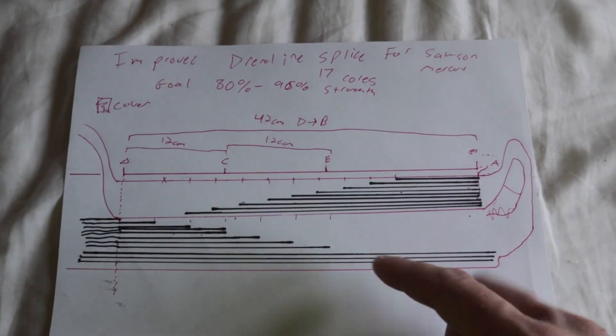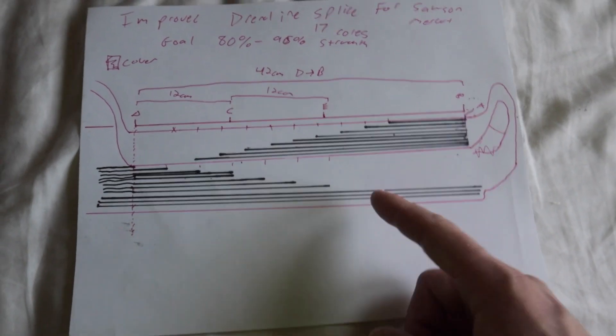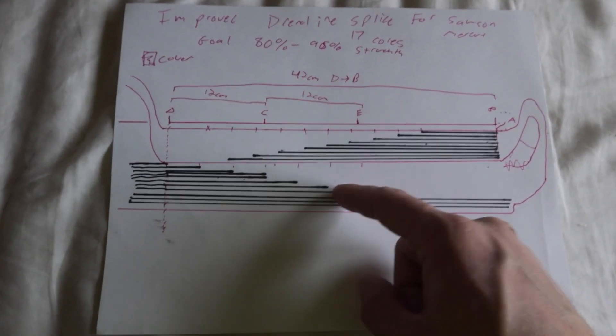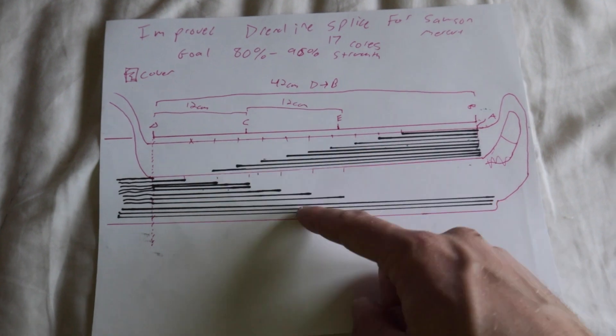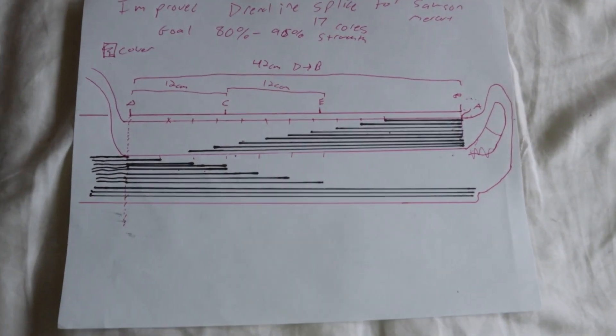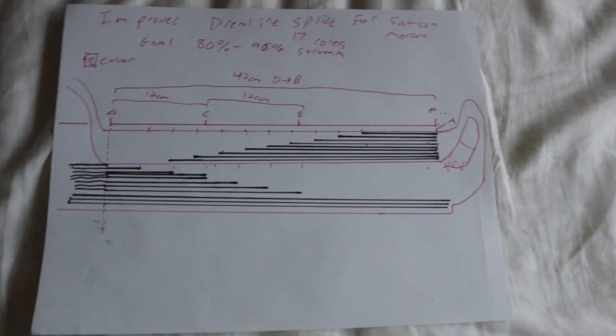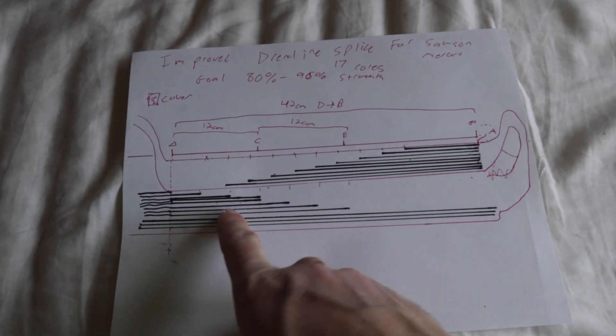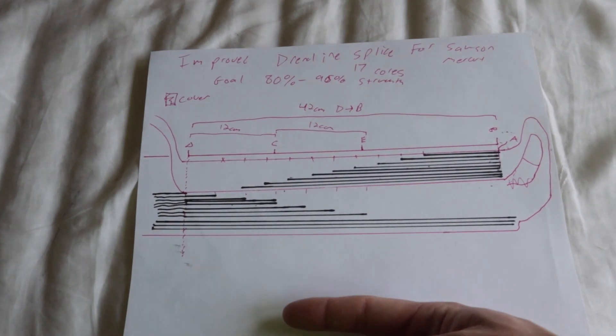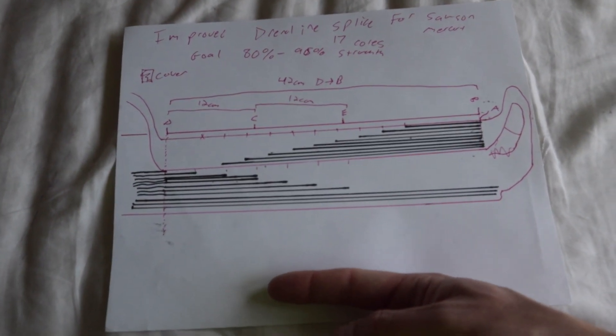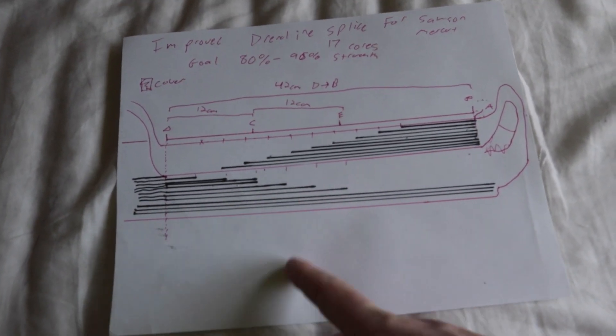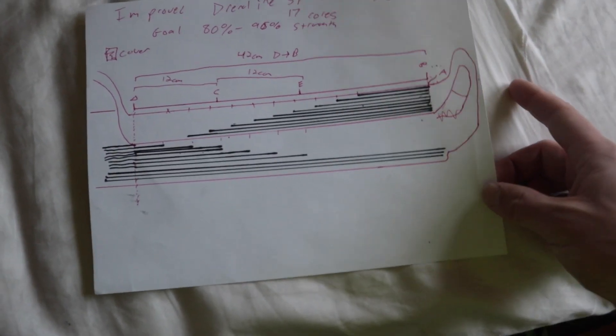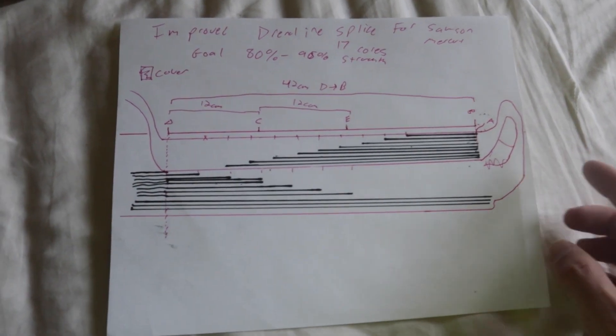I did change the ratios a little bit to begin with. So, this is an exact drawing for what it looks like inside the mercury splice that I did. That's why there's so many cores. Mercury has 17 cores. So, you can see here, I changed it. So, instead of taking 55% out at the crossover, I took 45% out and left 55% in. So, that was the first thing I changed.